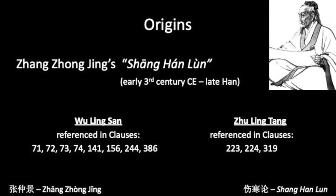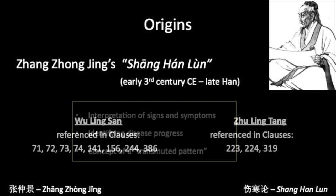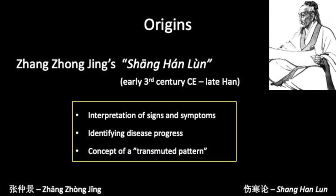The differences between these two formulas show us how the Shang Han Lun informs us about Chinese herbal medicine — in this case interpreting the meaning of certain signs and symptoms, identifying disease progress, and introducing us to the concept of a transmuted pattern. For several reasons, in our times, Zhu Ling Tang serves more as a didactic formula.